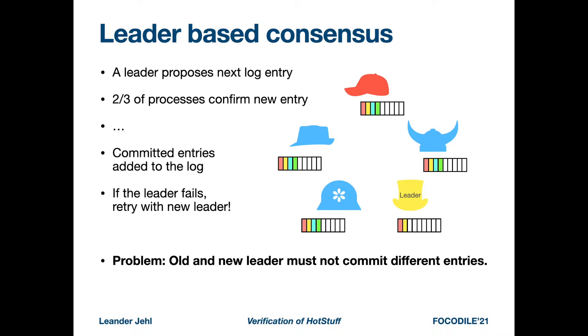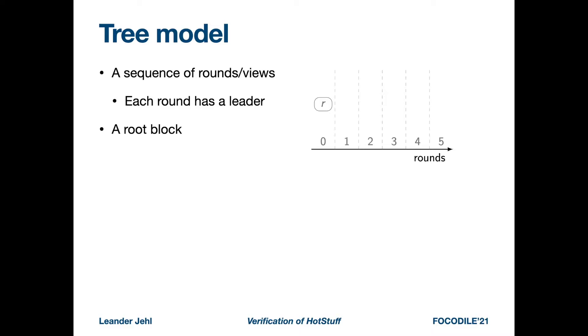If the leader fails, a new leader is assigned that may propose new entries. The problem in leader-based consensus is to ensure that the old and new leader do not commit different entries at the same index.